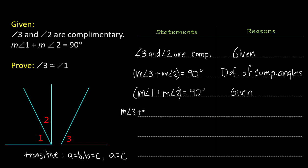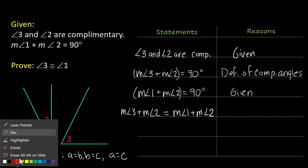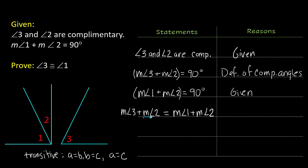So the measure of angle 3 plus the measure of angle 2 equals the measure of angle 1 plus the measure of angle 2. Do you guys see there's a measure of angle 2 on both sides of this equation? So just like any other algebra equation you can think of the idea of subtracting those out. Oh I forgot to put the reason there. The reason I did this was my transitive property of equality.